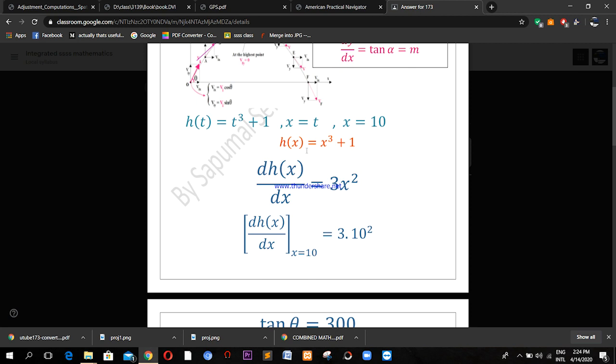You can derive both sides by x, then you will get 3x². Then at which point you have to find out the instantaneous direction after 10 seconds. It means at the point x = 10.